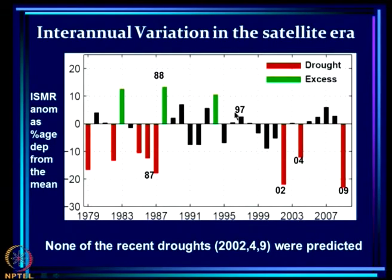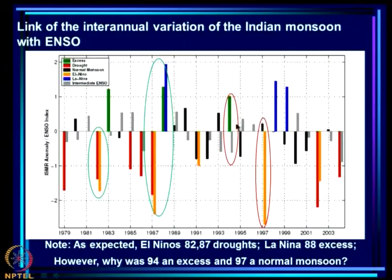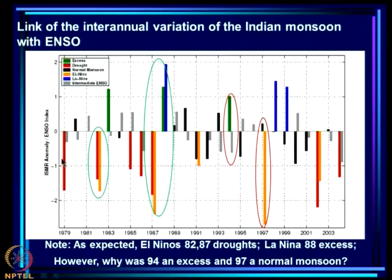We will see that 1994, 1997, and 1983 are very special years in this talk. It is worth noting that 1997 was the largest El Niño of the century. The ISMR is plotted again with the same color scheme: red means droughts, green means excess rainfall, and black is normal rainfall.